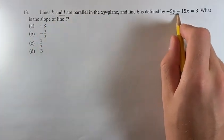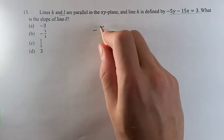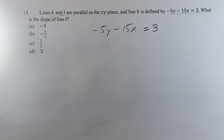We're given the equation of k and we're looking to find the slope of line l. Since the two lines are parallel, they're going to have the same slope. So we can find the slope based off this equation, then we'll be able to find the slope of line l as well.